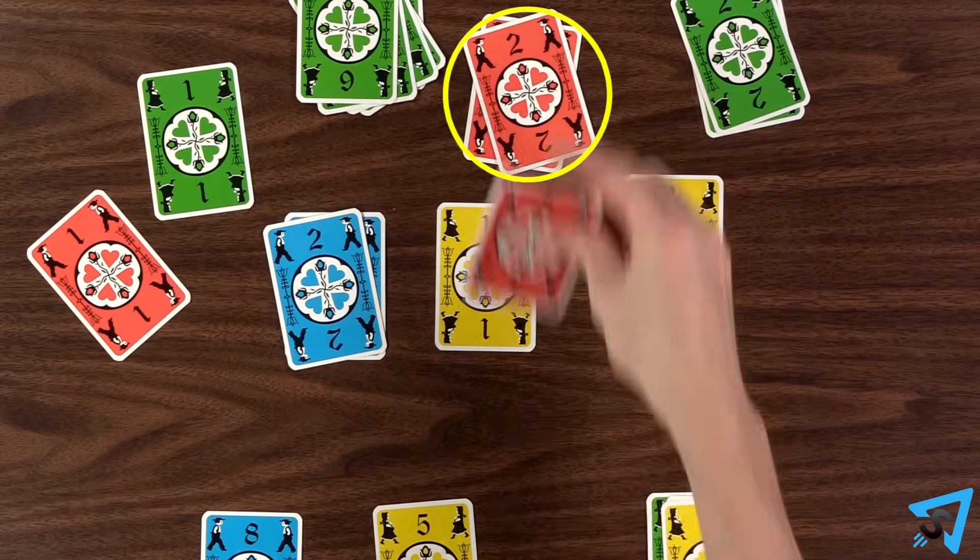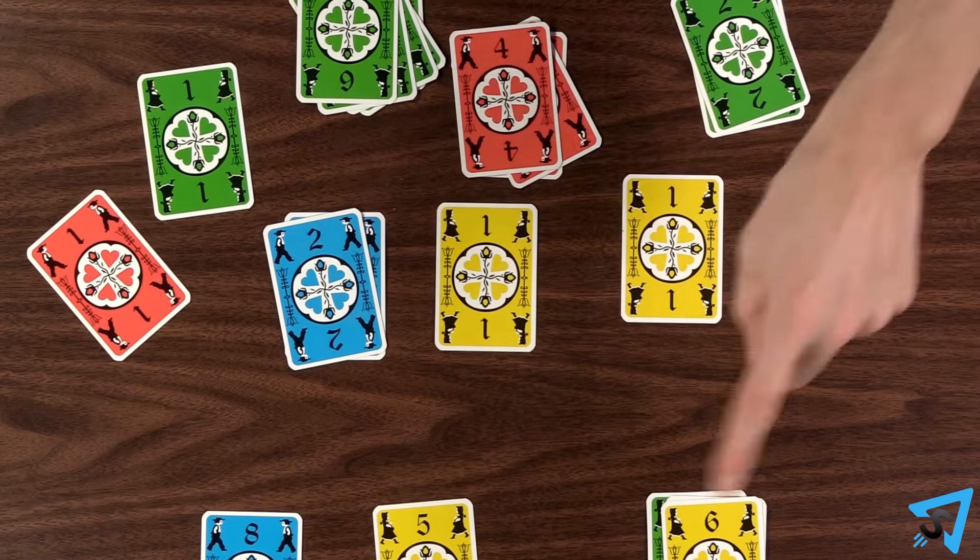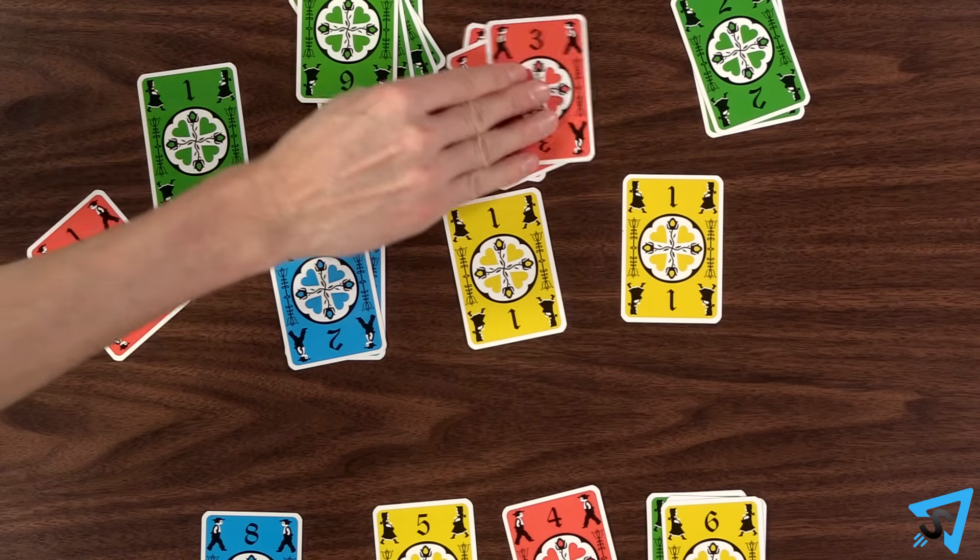If a player misplays, then any player may shout dutch and all play stops. Return cards to their owners until the error is corrected, then play resumes.